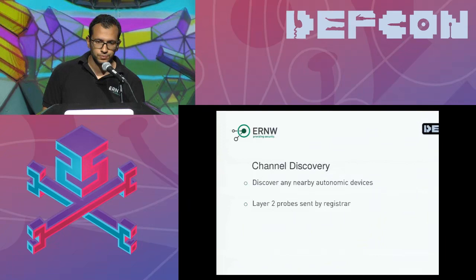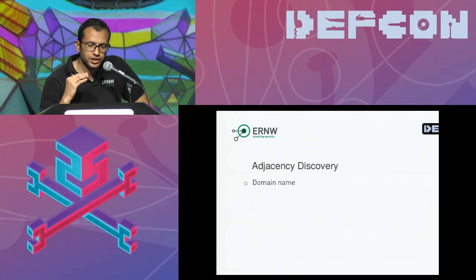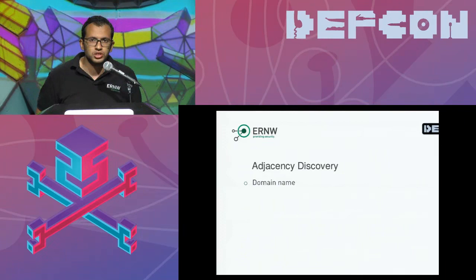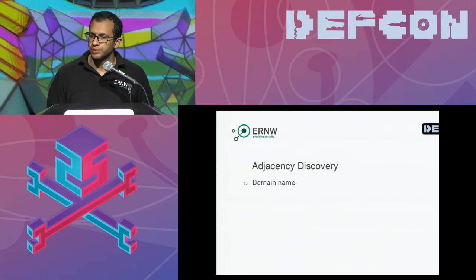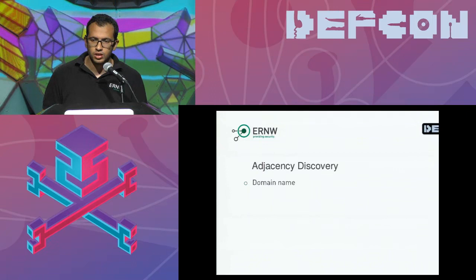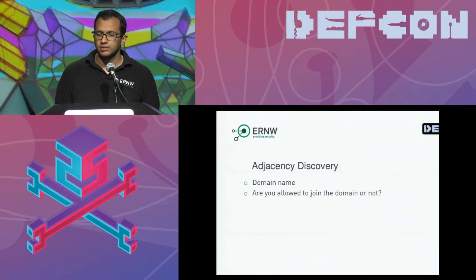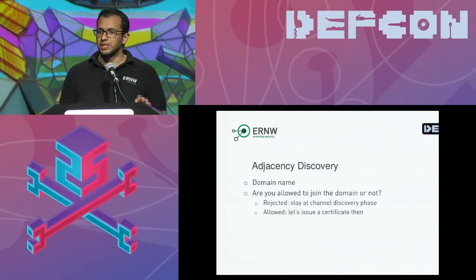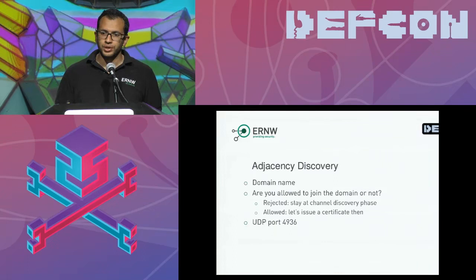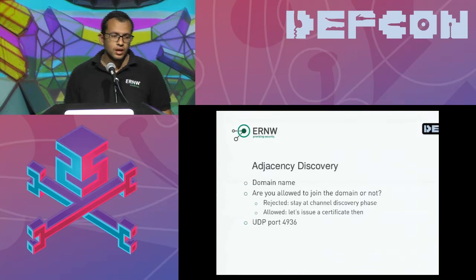In adjacency discovery, we go from layer two to layer four communication. The register announces the domain name and network it supports and asks whether the new device wants to join. Whether a device can join is determined by a whitelist of serial numbers. If rejected, they remain layer-two neighbors. If accepted, a certificate is issued as the device's ID for all further communication. This is a UDP service running on port 4936.